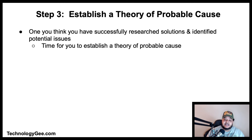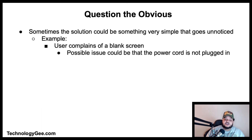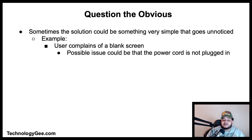Step three: establish a theory of probable cause. Once you think you have successfully researched solutions and identified potential issues, it is time to establish a theory of probable cause. To do that, you want to question the obvious. Sometimes the solution to a problem could be something very simple that just goes unnoticed. For example, a user calls the help desk to report that their screen suddenly went black.